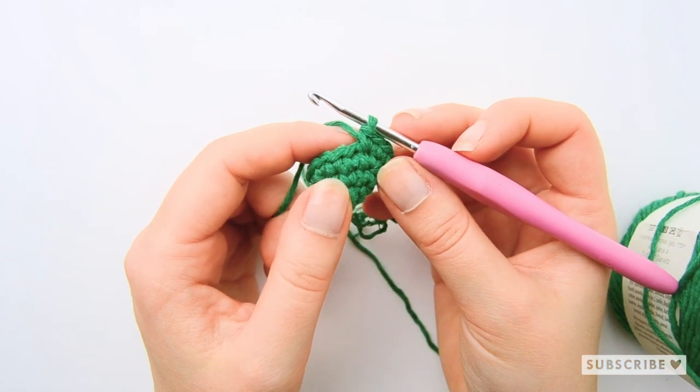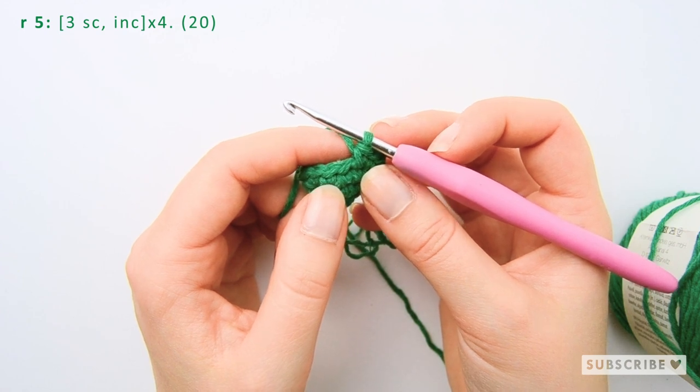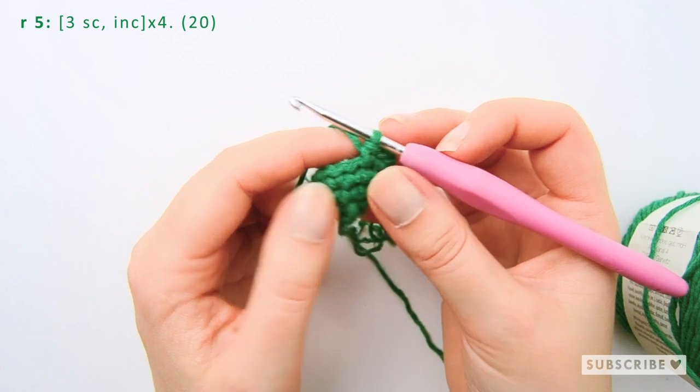On the next row we are going to crochet three single crochets, one increase, four times until we have 20 stitches and this is our last increase row.